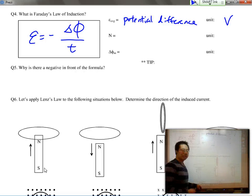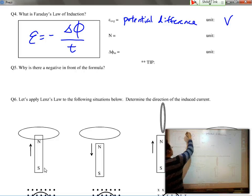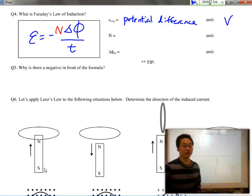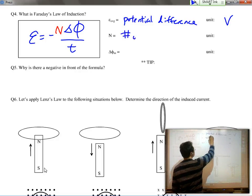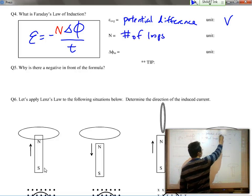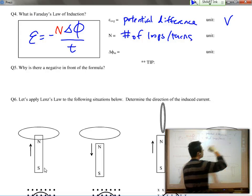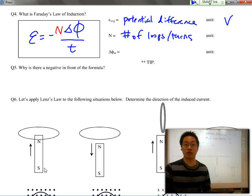Now it's not stated on your AP reference table but really there should be an N as well in front of this formula which really talks about the number of loops or turns that the flux is going through.